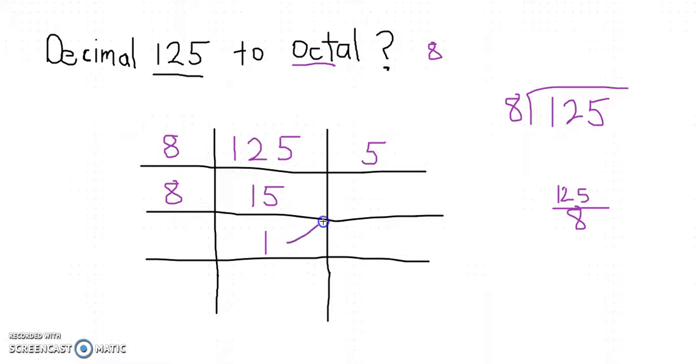Again, you've got to get down to 0 down here. 1 divided by 8 equals 0 with a remainder of 1. Now that this is a 0, you get to stop.